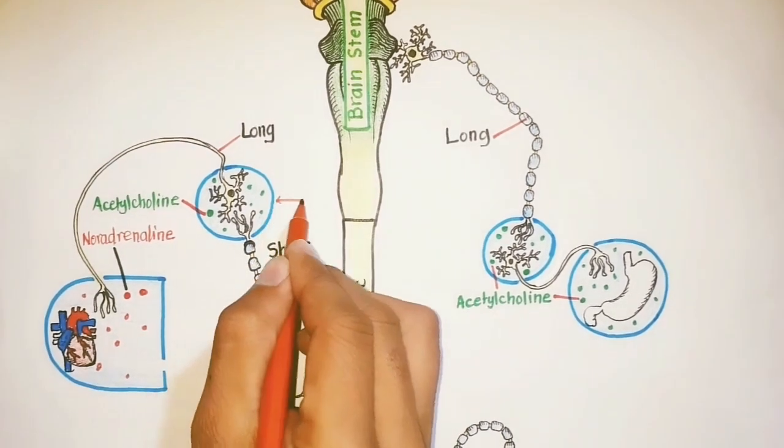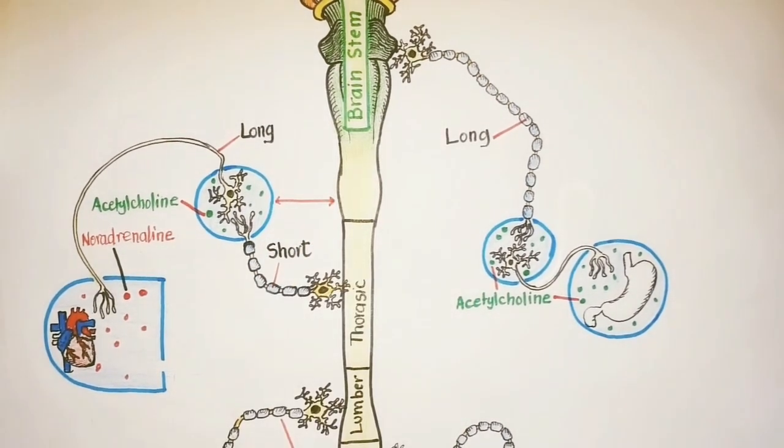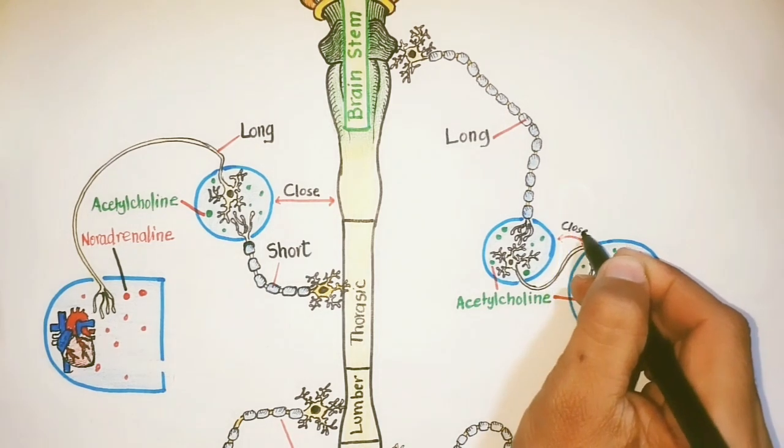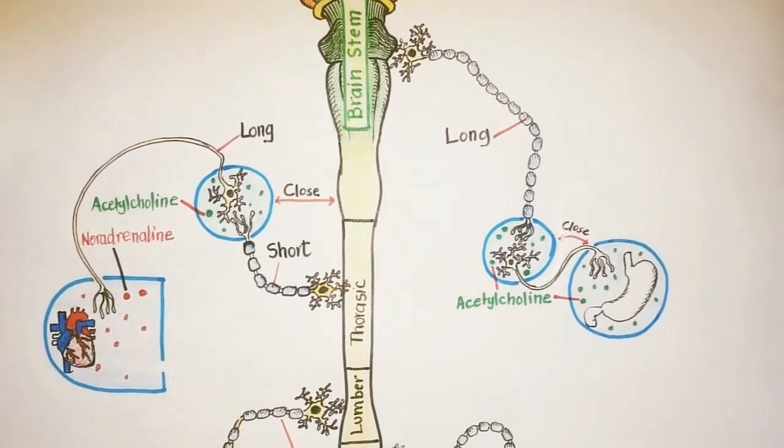Besides, the sympathetic ganglia are usually close to the spinal cord, and so the preganglionic fibers are short. Whereas the ganglia of parasympathetic division are close to the organ innervated, and that's why the preganglionic fibers are long.